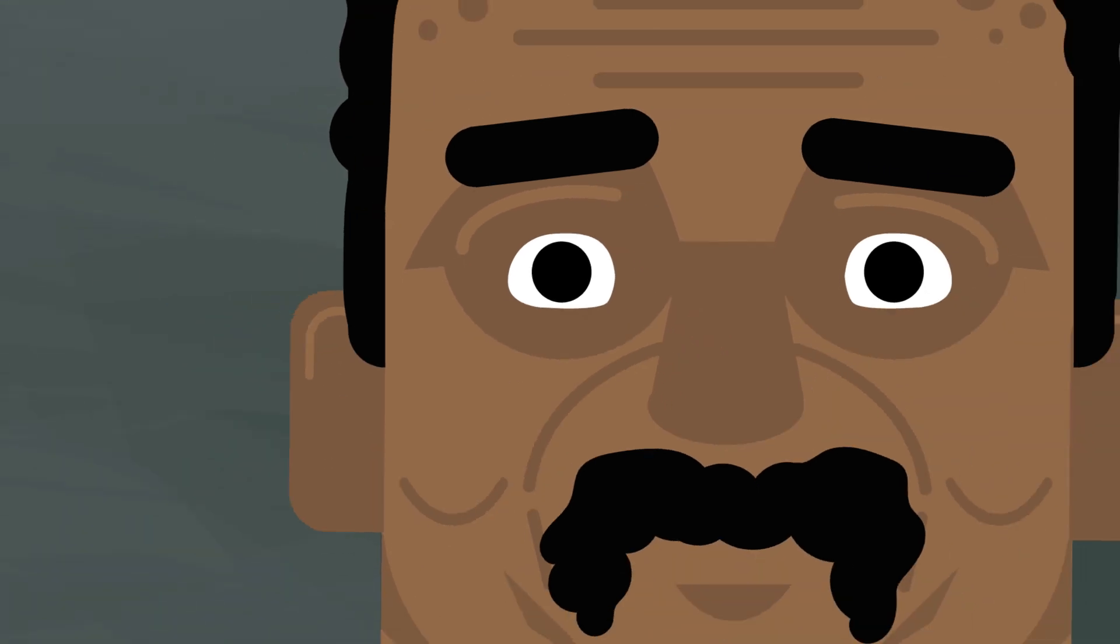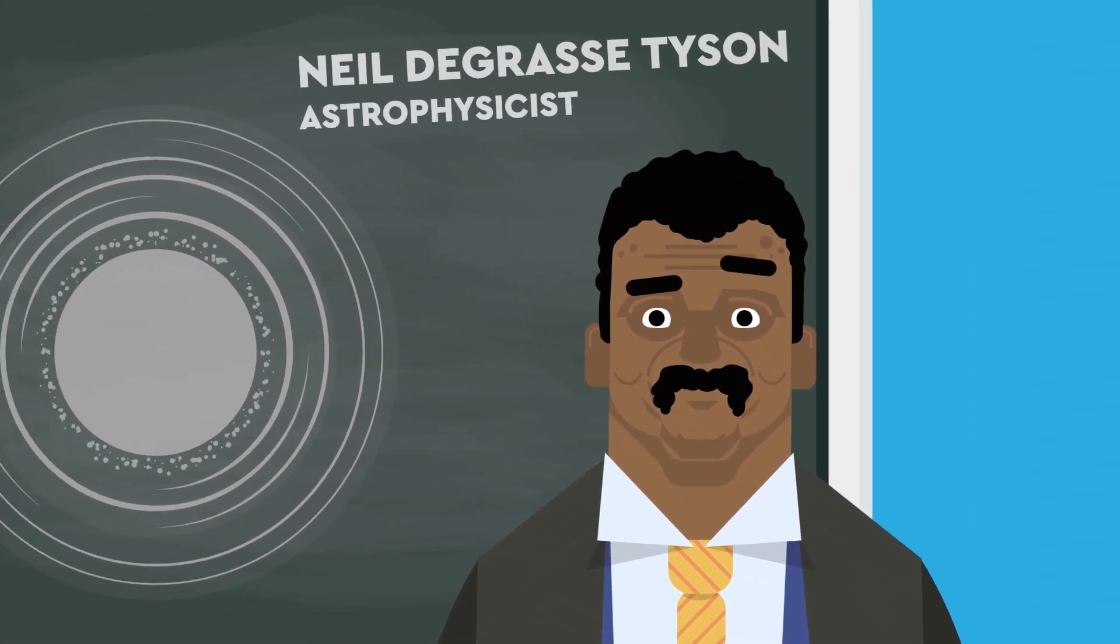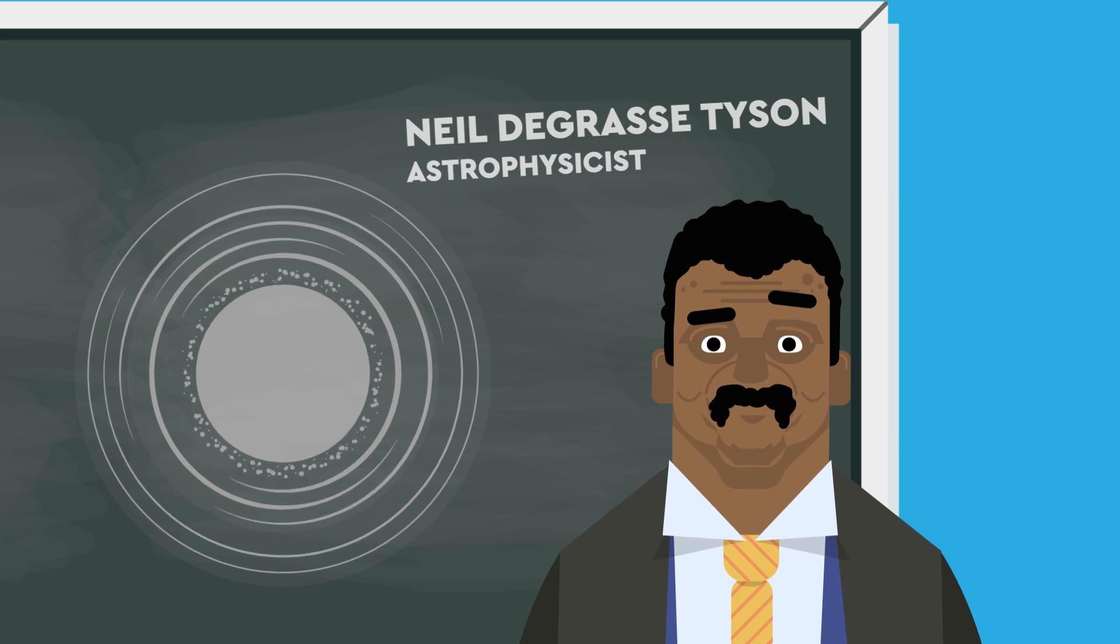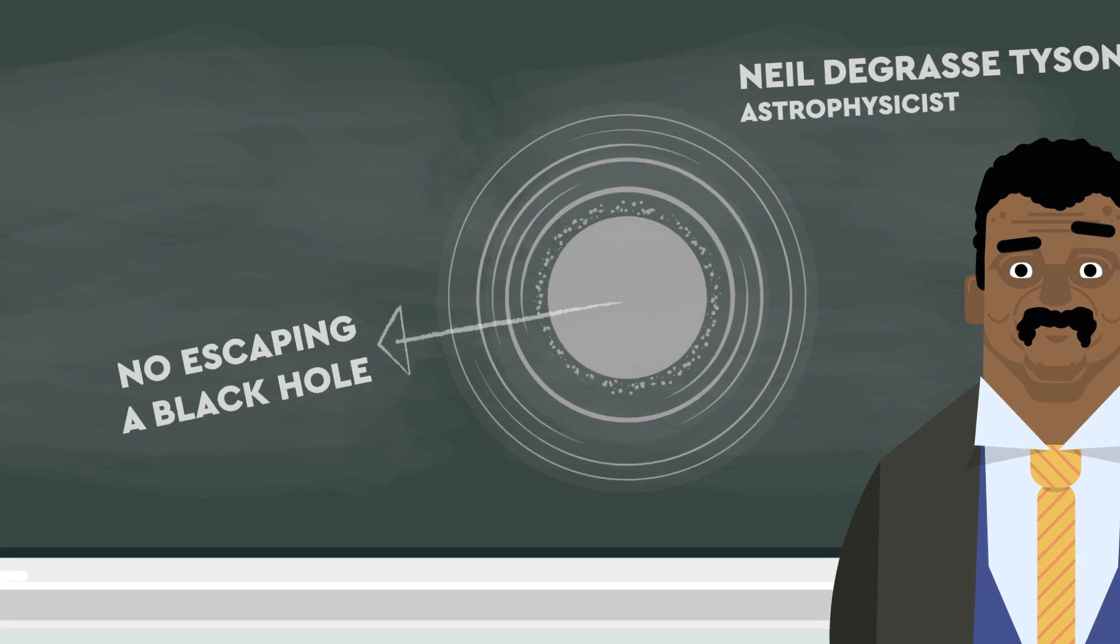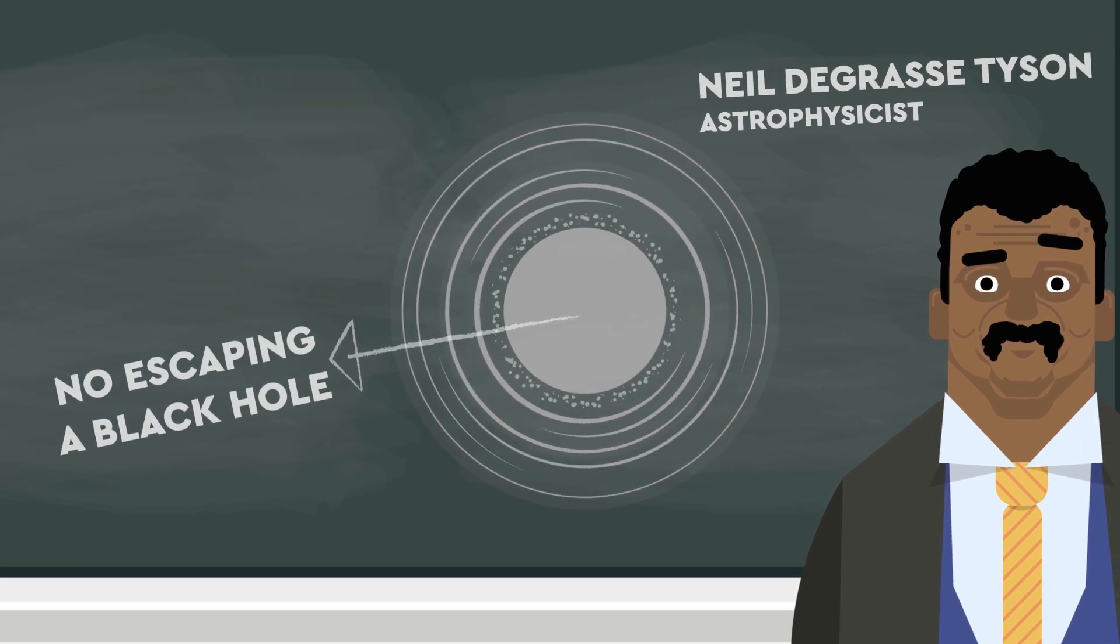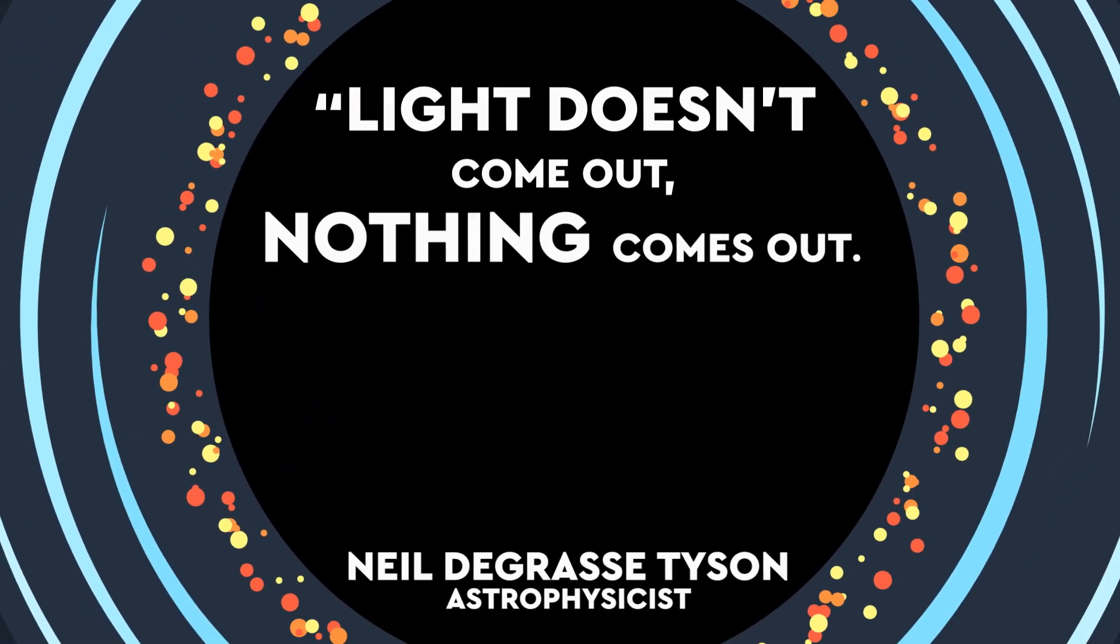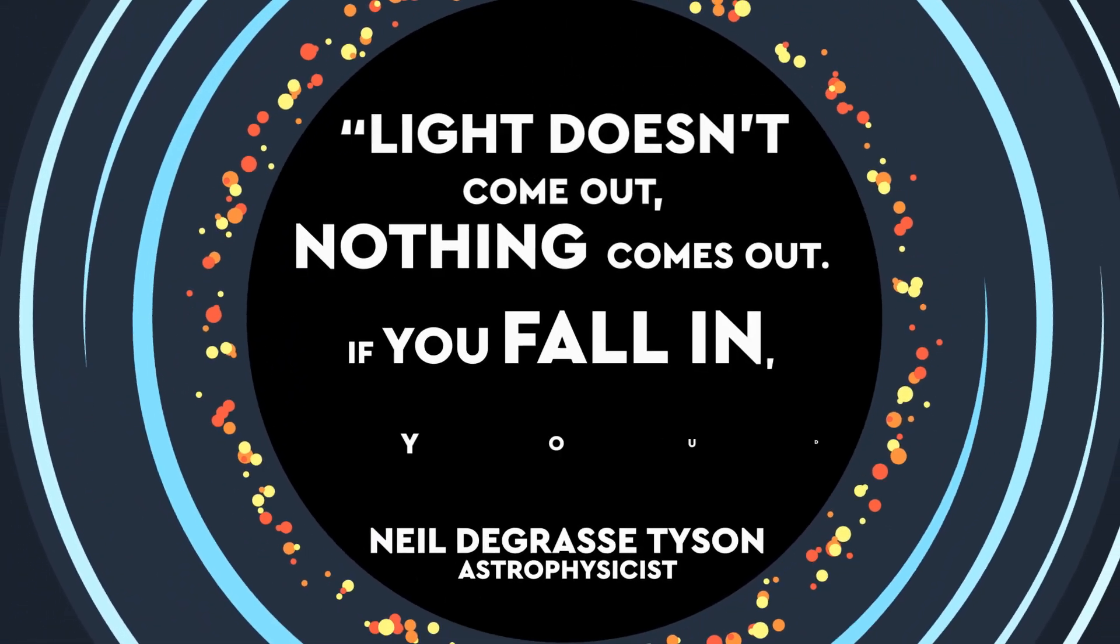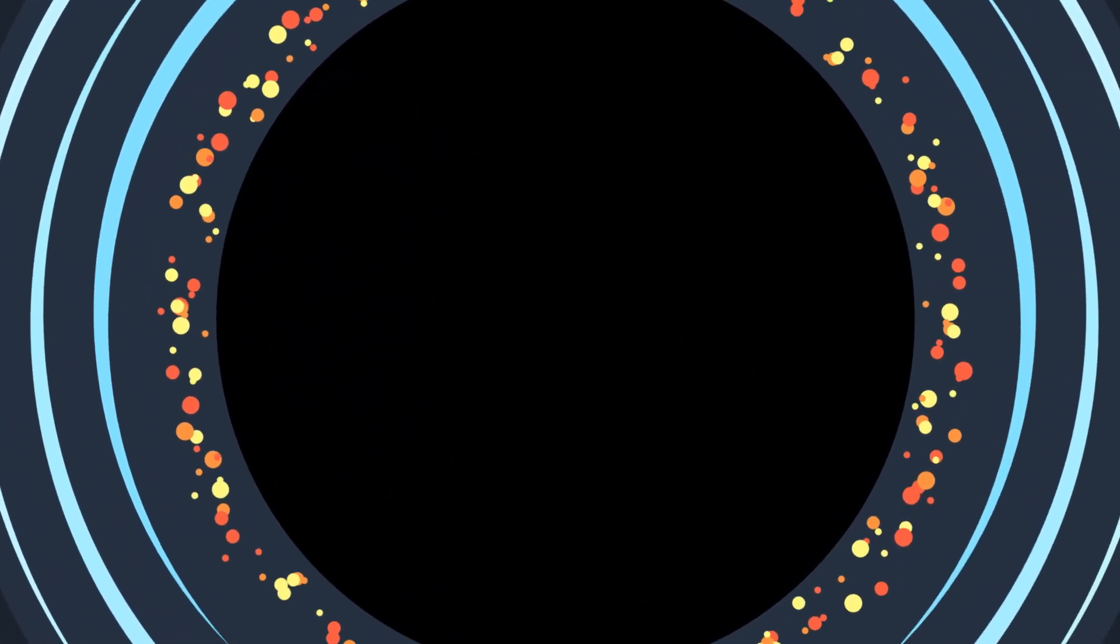While black holes might make us question everything we've ever believed in and give the biggest brains on the planet something of a headache, there's one thing everyone agrees on: you can't get out of one. Neil deGrasse Tyson put it simply. Light doesn't come out, nothing comes out. If you fall in, you don't come out. But is this really true? Can nothing, absolutely nothing escape from a black hole?